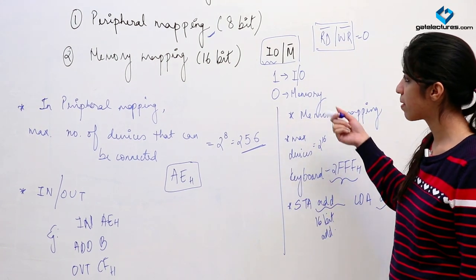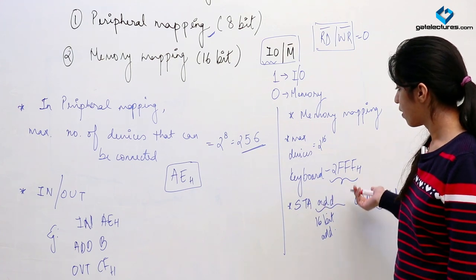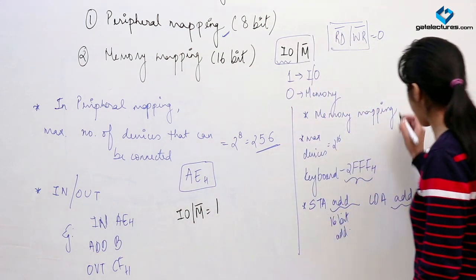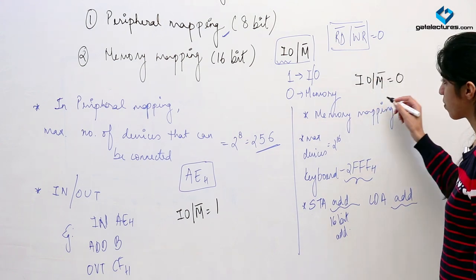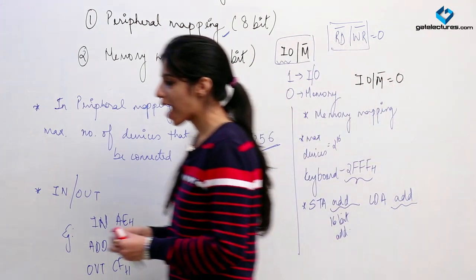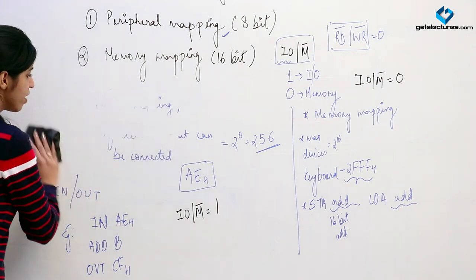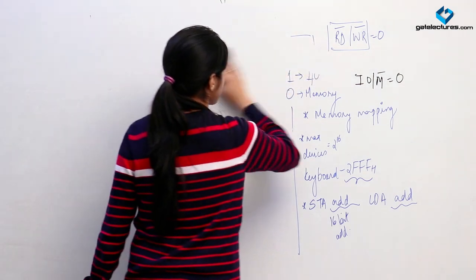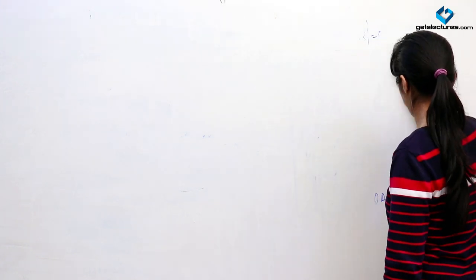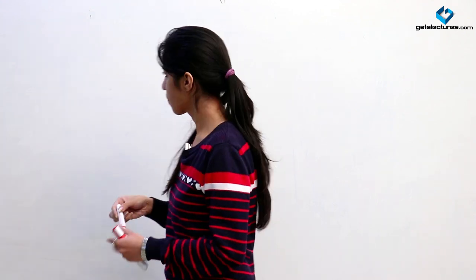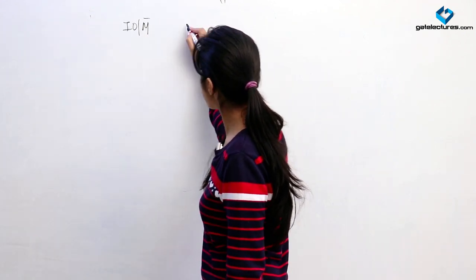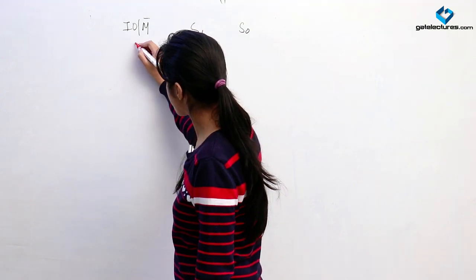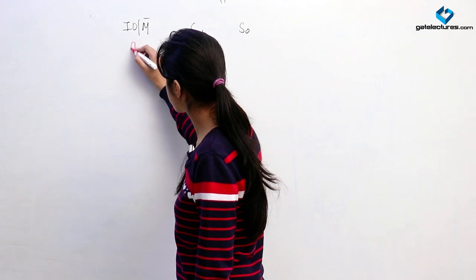With memory interfacing you are going to use STA and LDA instructions. Here the status of IO/M̄ is going to be 1 for peripheral mapping, and IO/M̄ is going to be 0 for memory mapping because we are treating devices like memory locations. Also, when we saw the pin diagram for 8085, we saw two status pins S1 and S0.